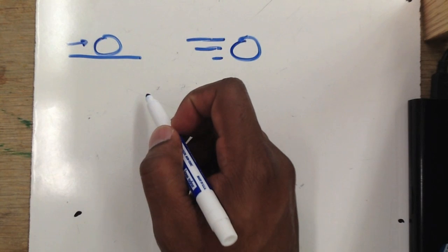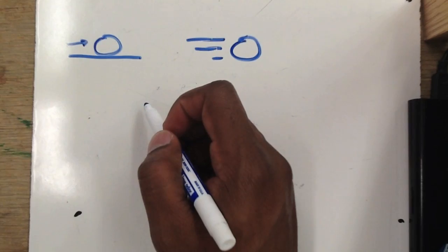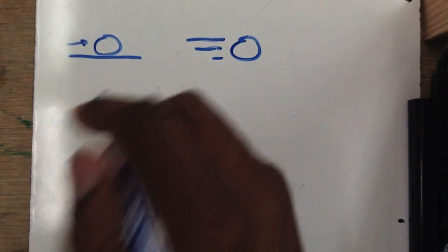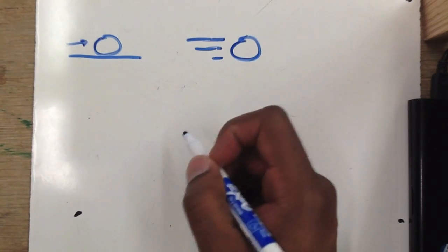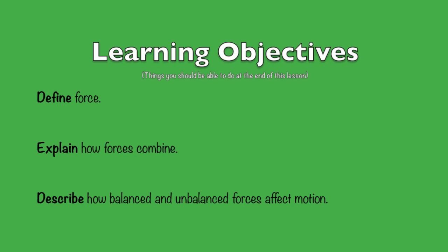Inertia — or the force needed to move an object — is dependent on that object's mass. It takes more force to move a massive object like a boulder than a small pebble. To summarize the learning objectives: force is a push or a pull; when forces combine in the same direction, the net force is in that direction and equals their sum; when forces combine in opposite directions, the net force is in the direction of the larger force and equals their difference; balanced forces have no effect on motion, while unbalanced forces cause a change in motion.